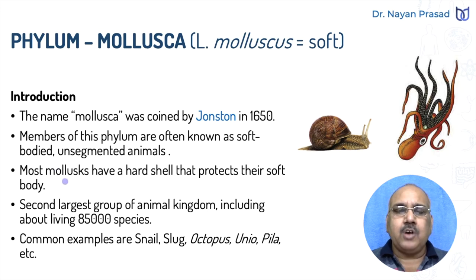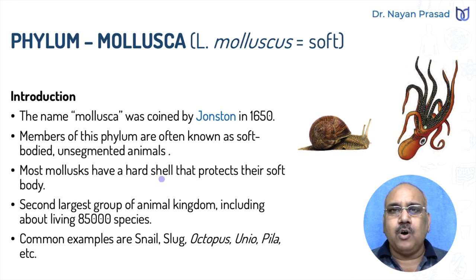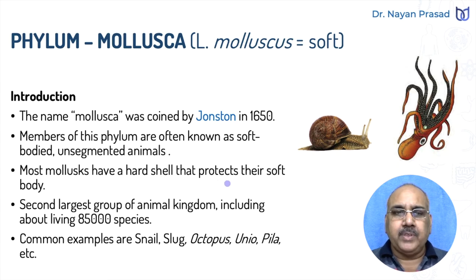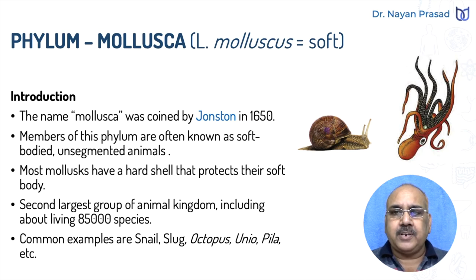In most molluscs, there is a hard calcareous exoskeleton called a shell that protects their soft body. Remember, in snail, the shell is present. However, in octopus, we don't see an outer protective cover.